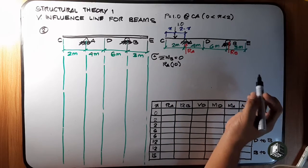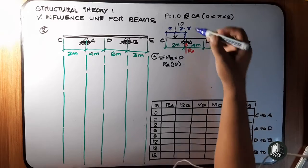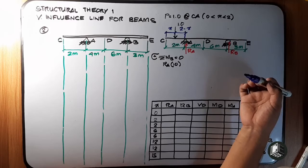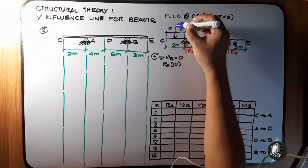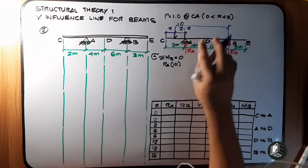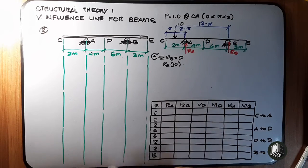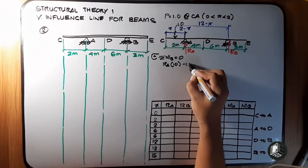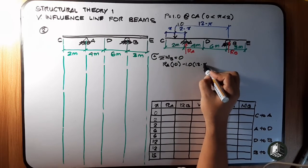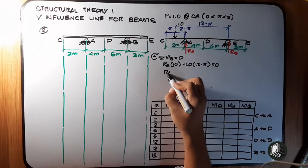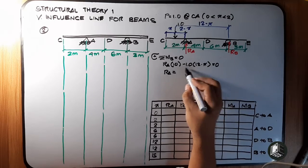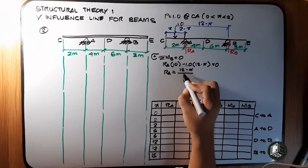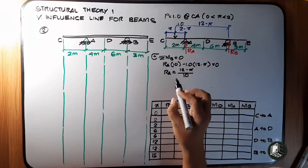Taking the sum of moments equal to 0, clockwise positive: RA multiplied by 10, then the 1.0 load is counterclockwise, so 1.0 multiplied by (12 minus X) equals 0. Therefore RA equals 12 minus X over 10.